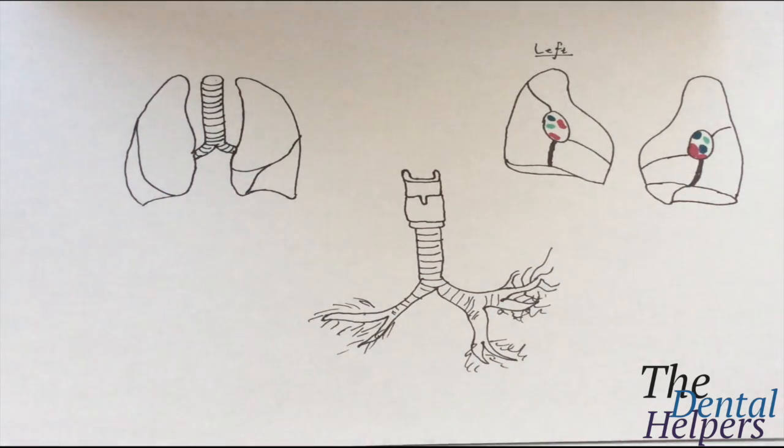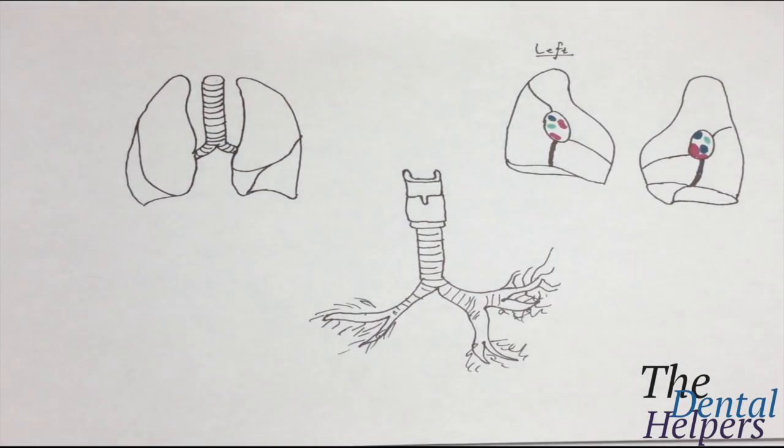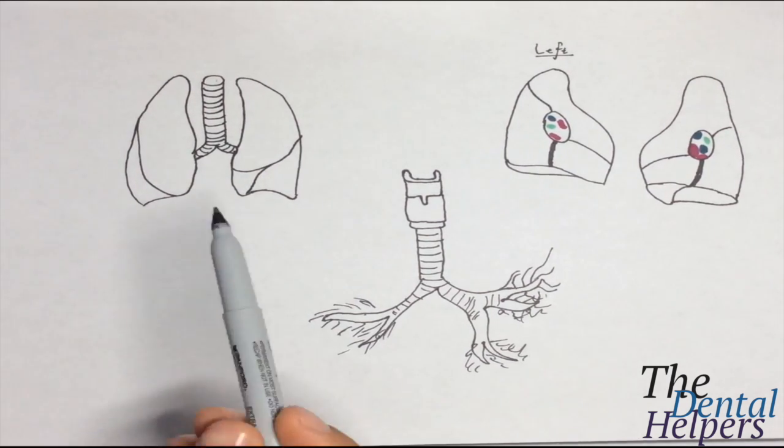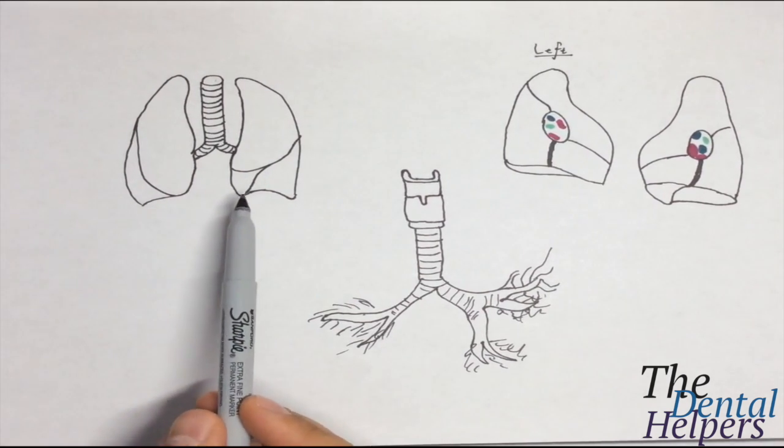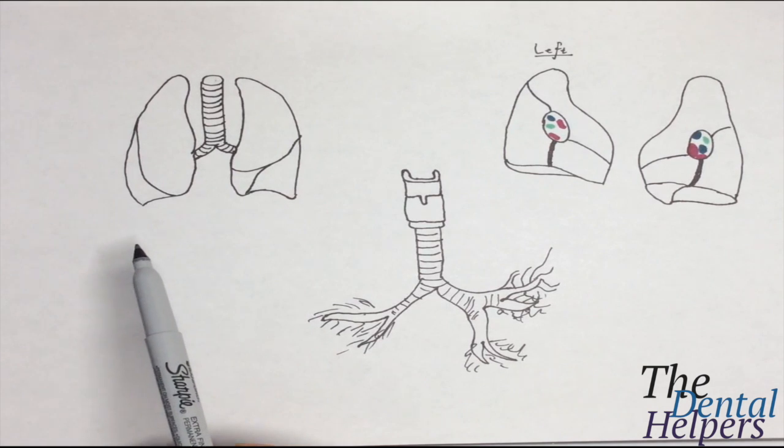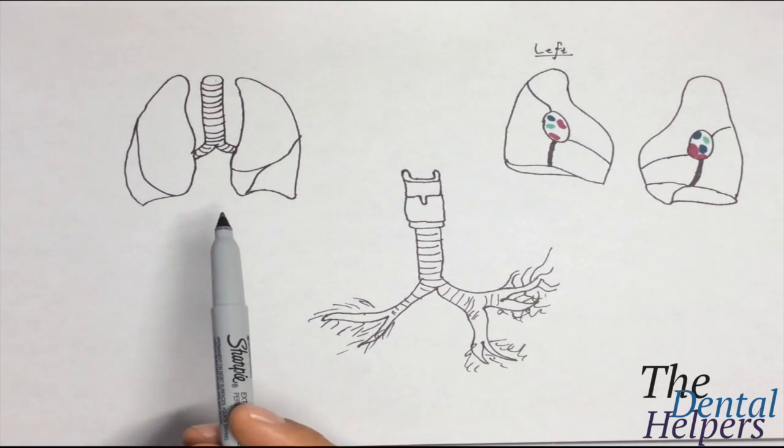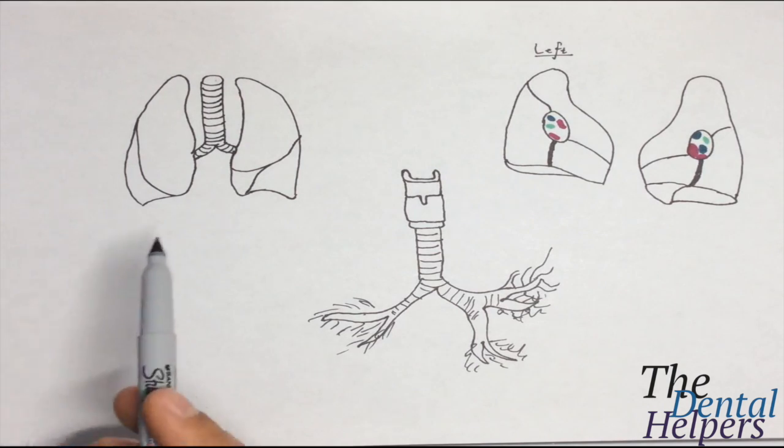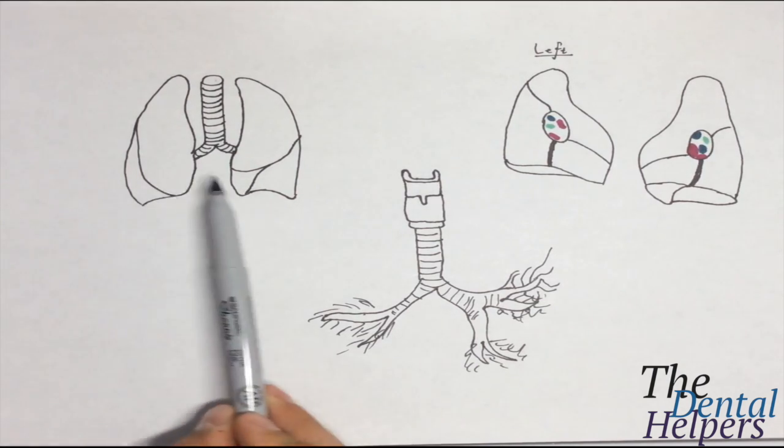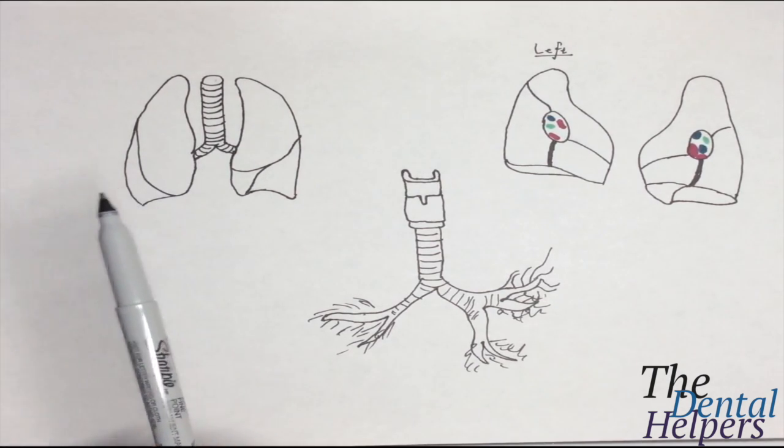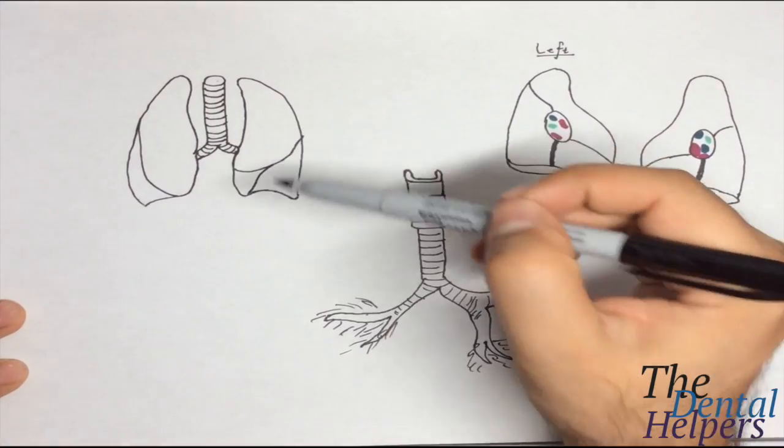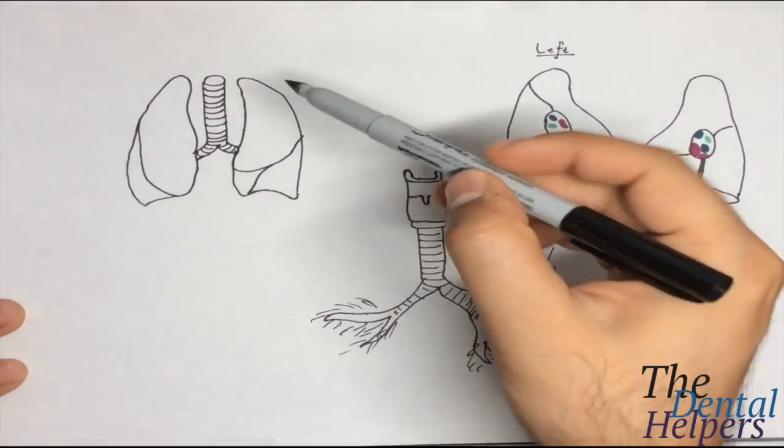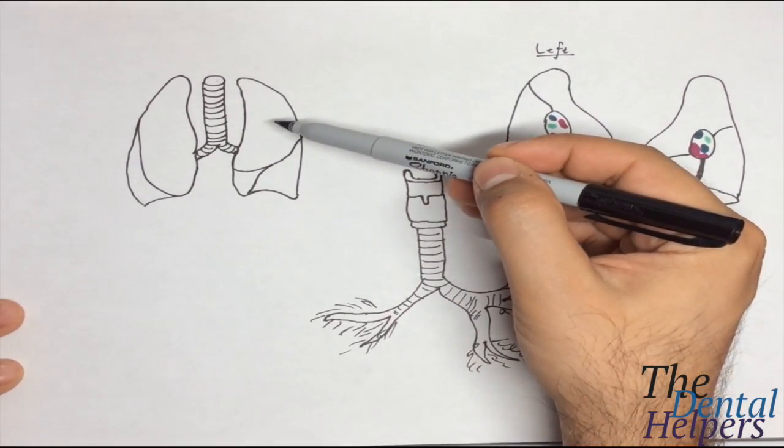In this video we're going to go over the lungs. I've already drawn out a posterior and an anterior view. If we look at this view right here, we have our lungs as though we're looking directly at the person.